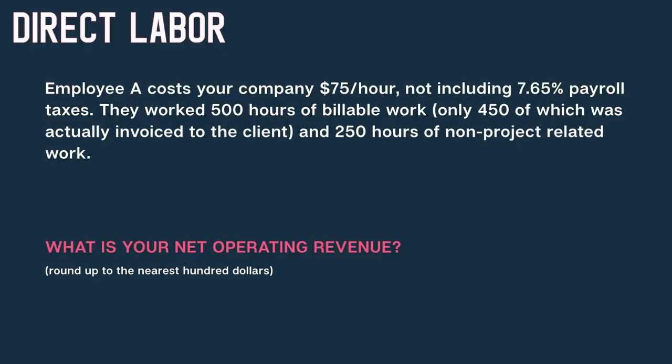Example problem: Employee A costs your company $75 an hour, not including 7.65% payroll taxes. They worked 500 hours on billable work, only 450 of which was actually invoiced to the client, and 250 hours of non-project-related work. What is the direct labor cost for Employee A? Round up to the nearest $100.